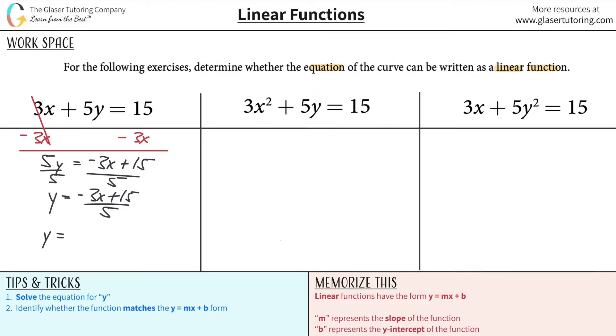As if math isn't hard enough, right? Can't even understand what I'm saying. So this is negative 3x over 5 plus 15 over 5. Now we can simplify this. This is negative 3x over 5, and this is plus 3.